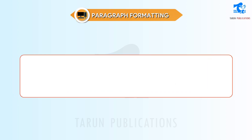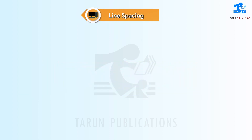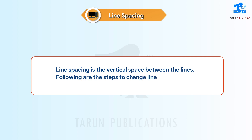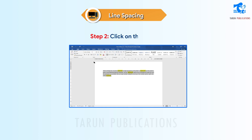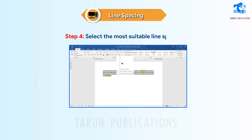Paragraph Formatting. Through paragraph formatting, we can change the look of the paragraph. These are some paragraph formatting options. Line Spacing. Line spacing is the vertical space between the lines. Follow these steps to change line spacing in a text. Step 1: Select the text to change line spacing. Step 2: Click on the Home tab. Step 3: Click on the Line and Paragraph Spacing tool in the Paragraph group. Step 4: Select the most suitable line spacing.